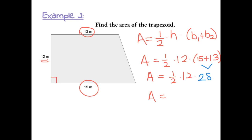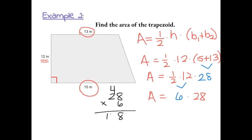One-half times 12 is half of 12, which is 6. Now we have 6 times 28. 28 times 6 gives us 168. So the area of this trapezoid is 168 meters squared.